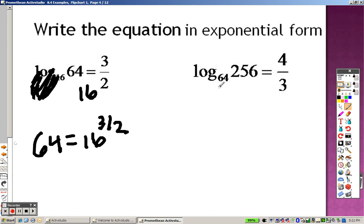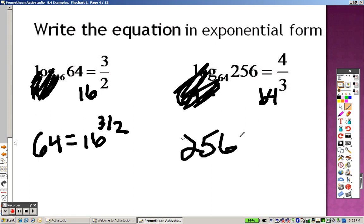And over here, the base is 64. So take that to the 64, and put those up in the air. Those cancel out. So I get 256 equals 64 to the 4 thirds.